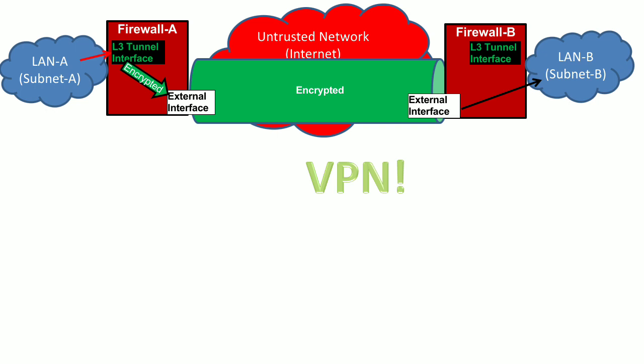The traffic is then routed in encrypted form towards the external interface of Firewall B. While flowing over this untrusted network managed by the service provider, all data from LAN A is encrypted, so the internet service provider or network service provider would not be able to see the local area network data. Upon reaching the remote external interface of Firewall B, the traffic is routed towards the tunnel interface — still in encrypted form — where it is decrypted by Firewall B and then routed in decrypted form towards LAN B. These are the interface configurations for this VPN.